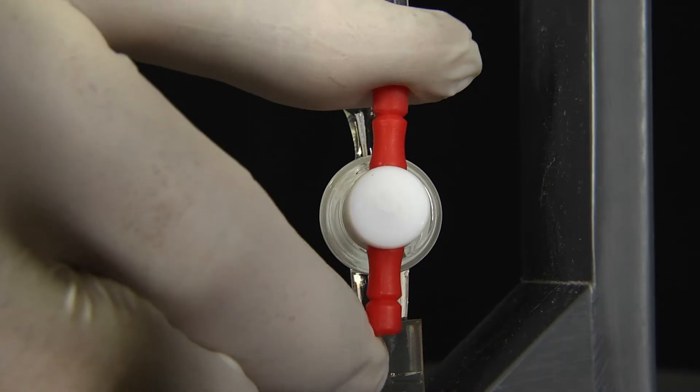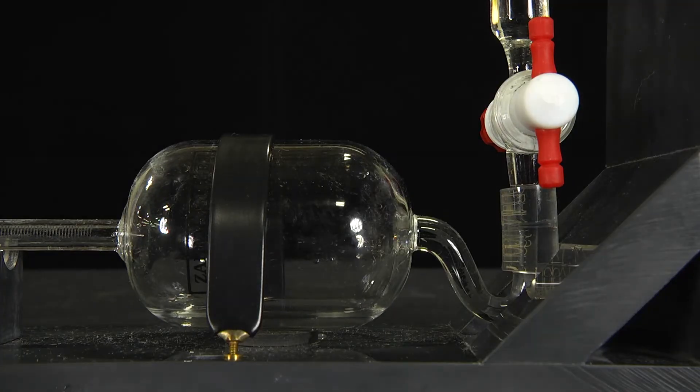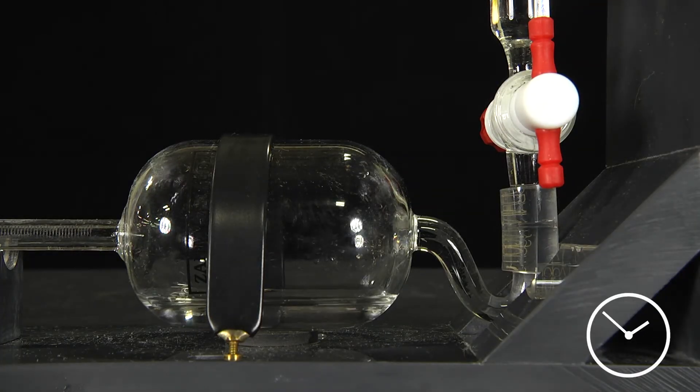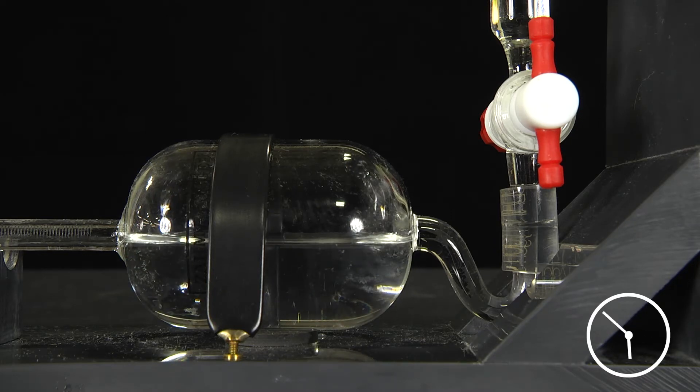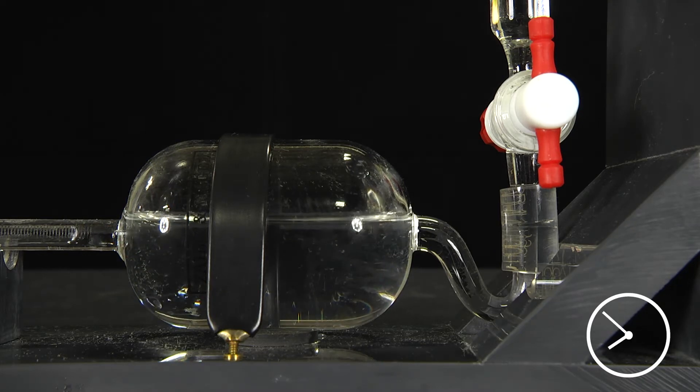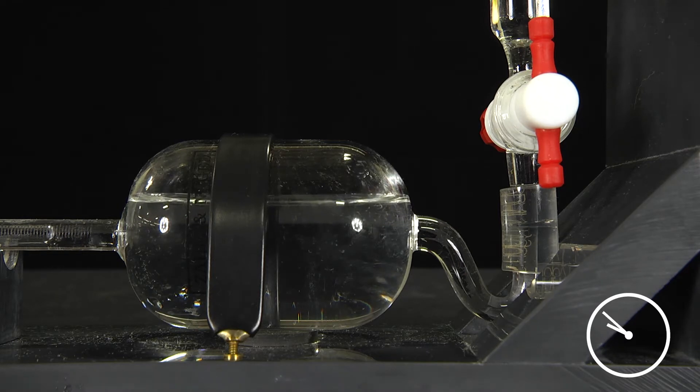Open the cock on the caustic reservoir and allow the solution to flow down into the absorption burette. Absorption of the CO2 gas now takes place until only air in the sample remains.